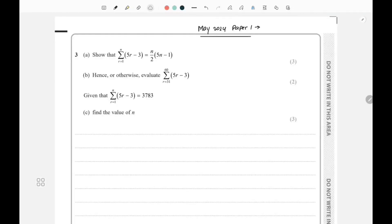Welcome to another video, May 2024 Paper 1 Pure Maths. In the first part they're asking us that the sigma notation sum from r equals 1 to n of (5r - 3) can be written as n divided by 2 multiplied by (5n - 1).